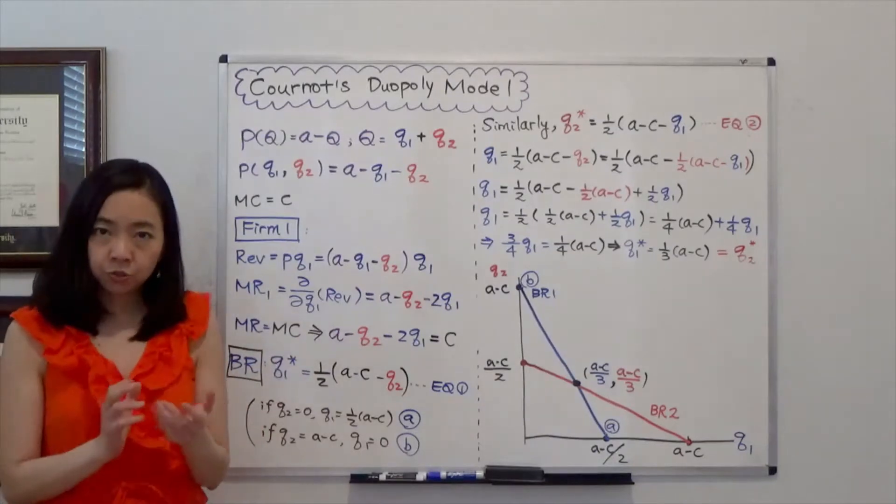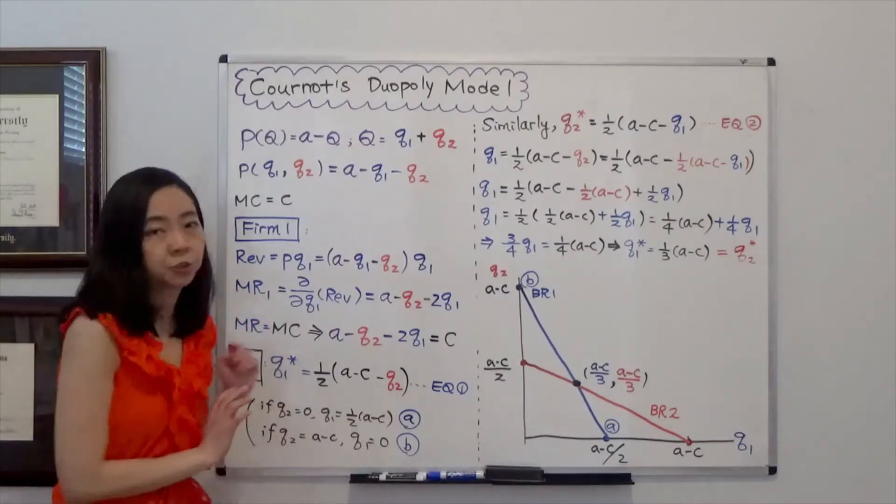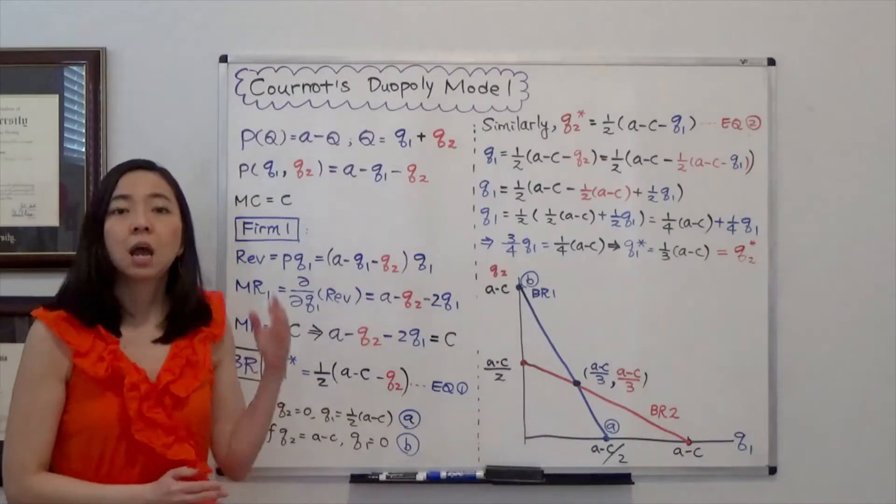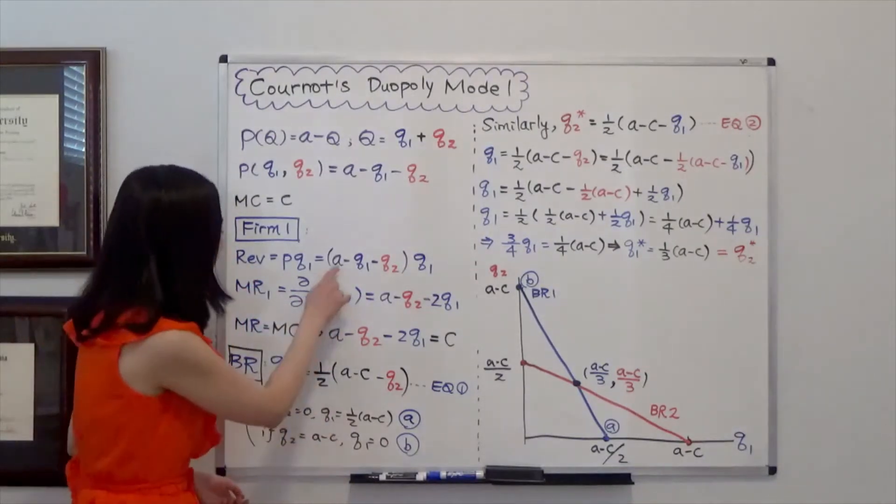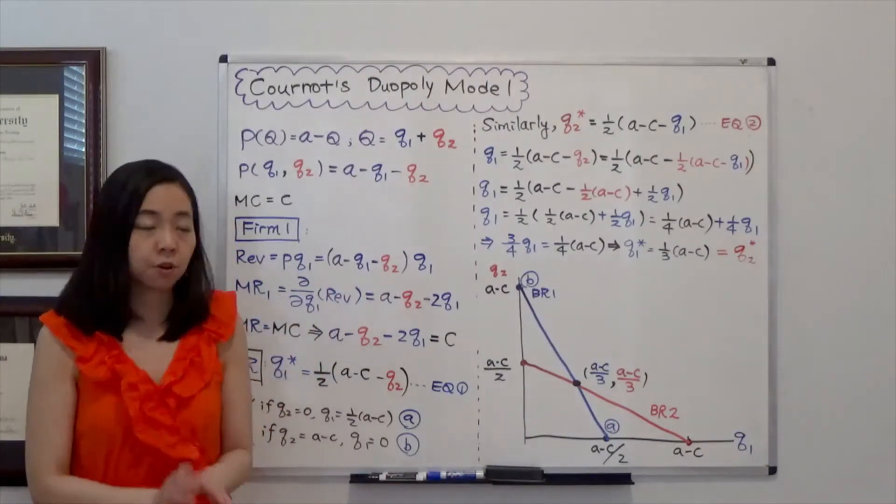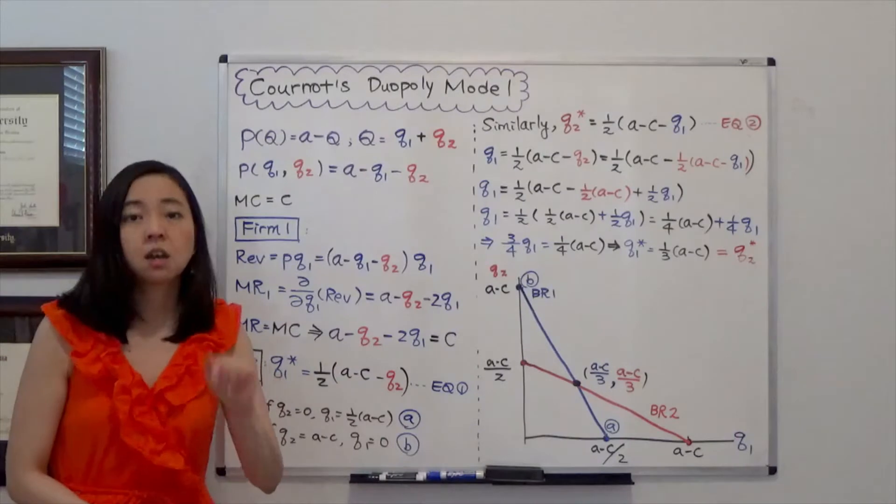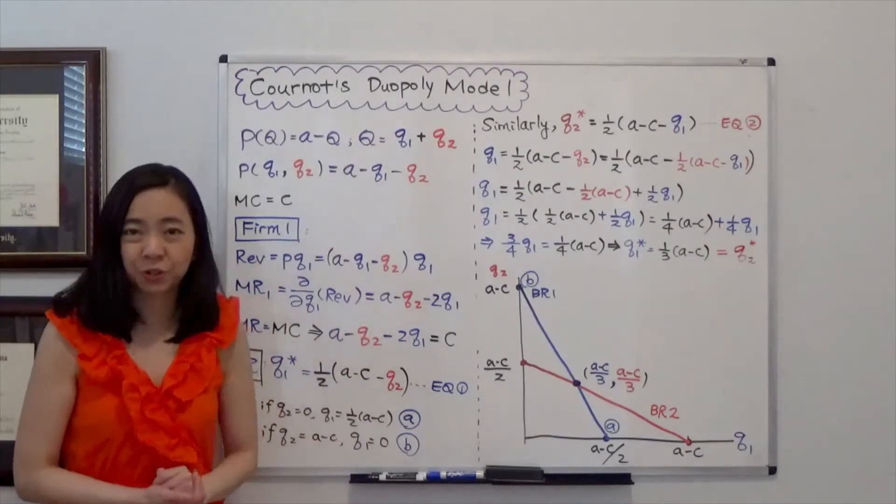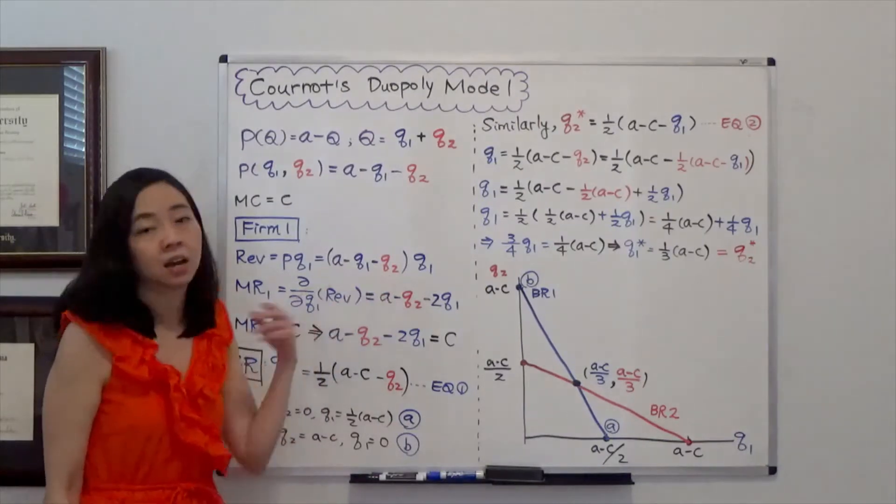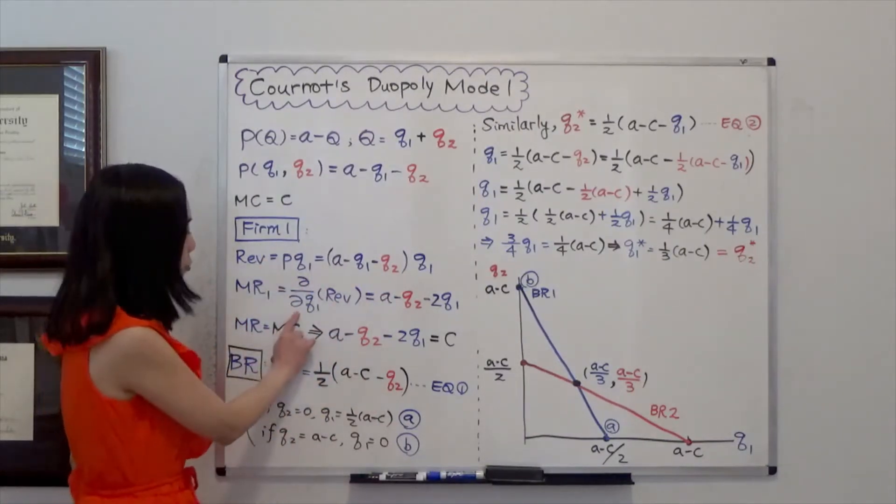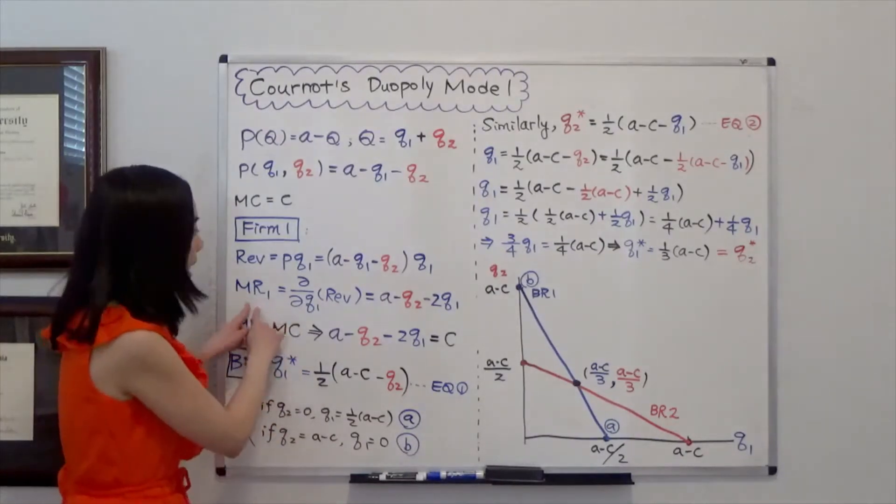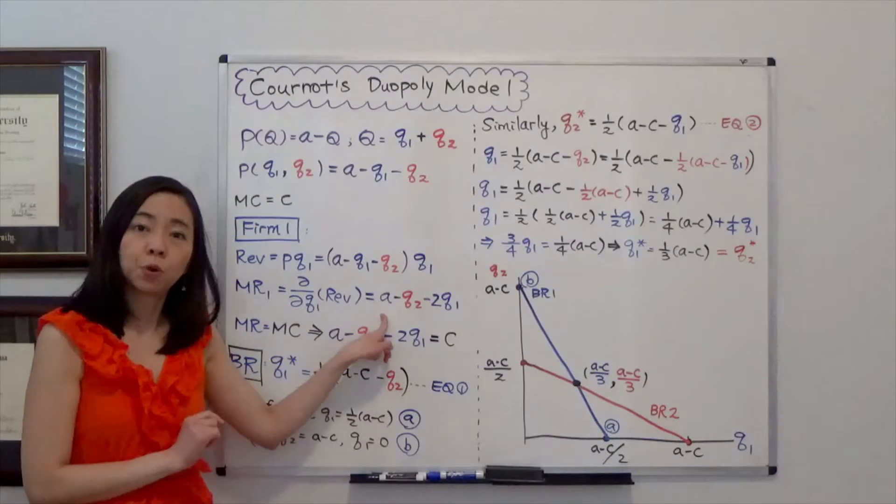And the marginal revenue is the partial derivative of revenue with respect to Q1. Because for firm 1, A is given and also Q2 is given. Remember firm 1 has no say about the quantity that firm 2 is going to produce. Meaning firm 1 will have to treat Q2 as a constant. So we take partial derivative with respect to Q1. So you find the marginal revenue for firm 1.